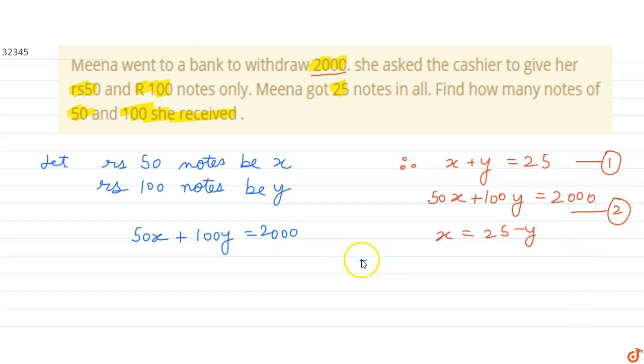This implies that 1250 minus 50Y plus 100Y equals 2000.